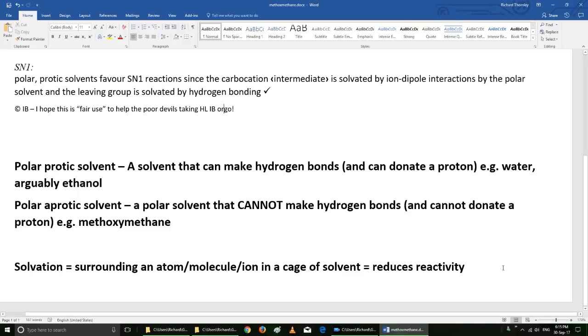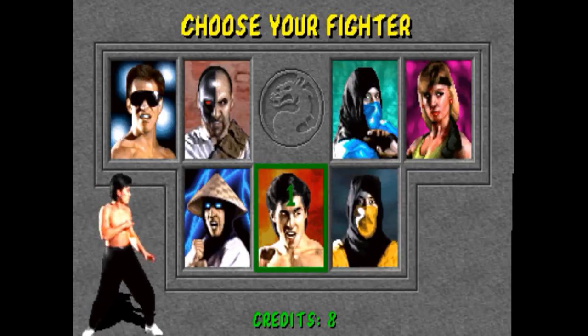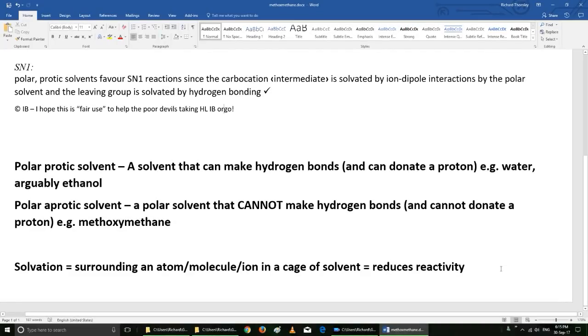And the key term here as well is solvation. Solvation happens when the solvent surrounds an atom, a molecule or ion in a cage. And that reduces its reactivity.